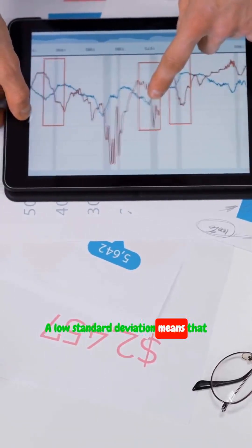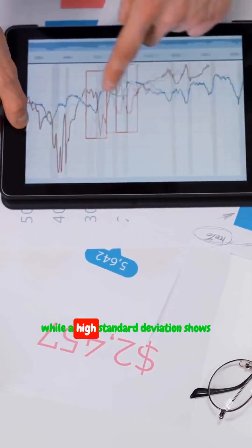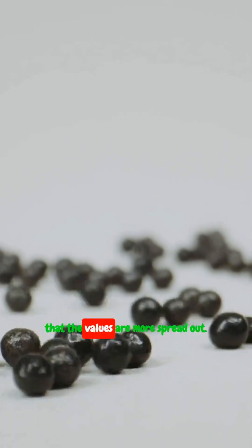A low standard deviation means that most values are close to the mean, while a high standard deviation shows that the values are more spread out.